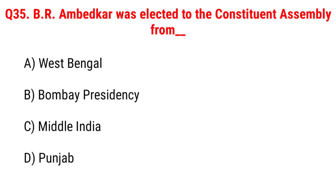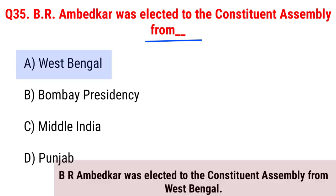Next question: B.R. Ambedkar was elected to the Constituent Assembly from Option A, West Bengal; B, Bombay Presidency; C, Central India; D, Punjab. The right answer is Option A, West Bengal. Dr. B.R. Ambedkar was elected to the Constituent Assembly from West Bengal.